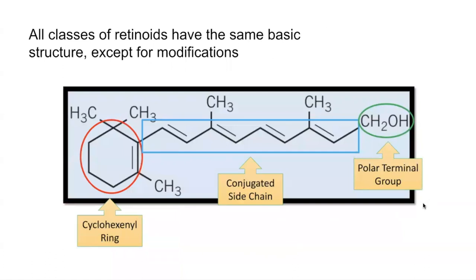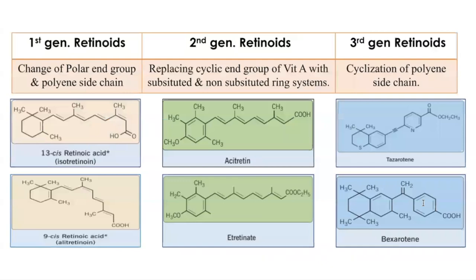All classes of retinoids have the same basic structure, and with each generation, there are slight changes in parts of the structure which give the retinoid its properties. The structure includes the cyclohexenyl ring on the left, a conjugated side chain in the middle, and a polar terminal group on the right. The reason different generations were developed is to achieve the highest therapeutic index by designing retinoids that are receptor-specific and function-specific, activating only desirable pathways and minimizing activation of pathways which lead to adverse events.